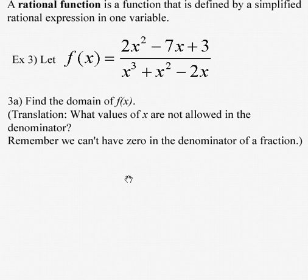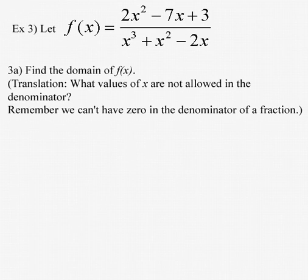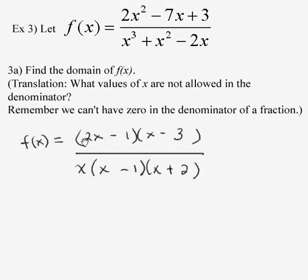whether it's a simple fraction or a rational algebraic function. So our job will consist of again factoring the numerator completely. The numerator by trial and error will factor into 2x minus 1 times x minus 3.